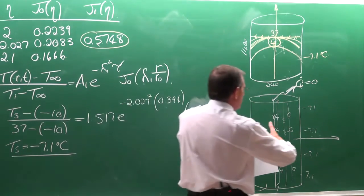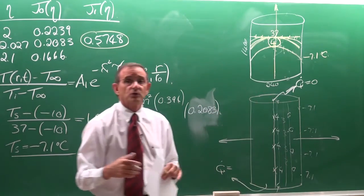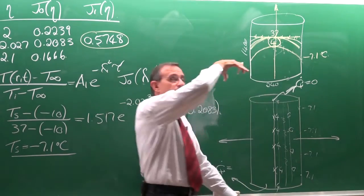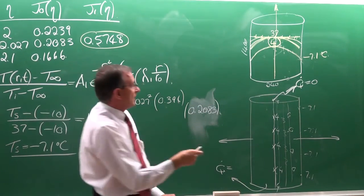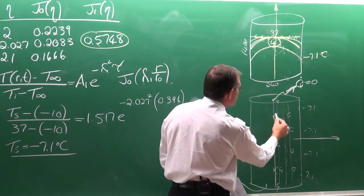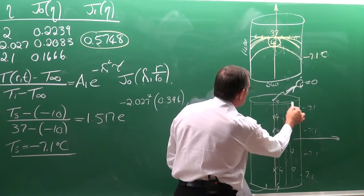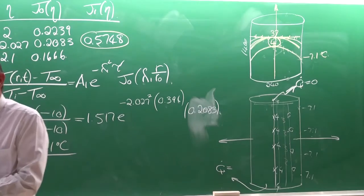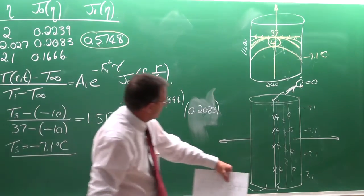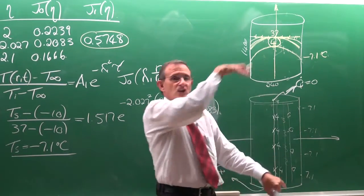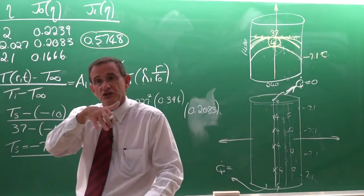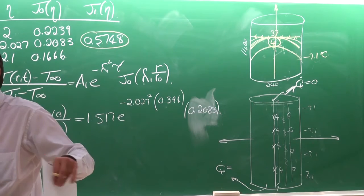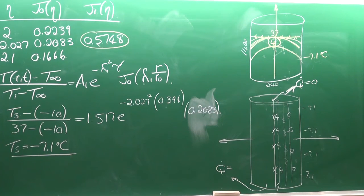This one-dimensional assumption means heat transfer occurs only in the radial direction. In practice, heat also transfers from the end surfaces, so the temperature distribution near the ends would differ. If those surfaces were insulated, then the purely radial flow assumption would be exactly correct.